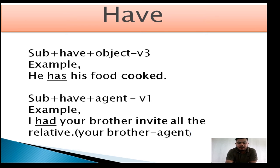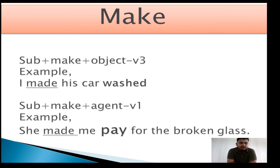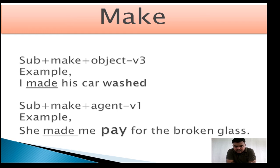The third causative verb is 'make.' The rule is: Subject + make + object = verb 3. If 'make' is followed by an object, the verb must be verb 3. Example: 'I made his car washed.' Here 'made' is the causative verb. 'His car' is talking about a car, not a person, so it is an object. Therefore the verb must be verb 3, which is 'washed.'